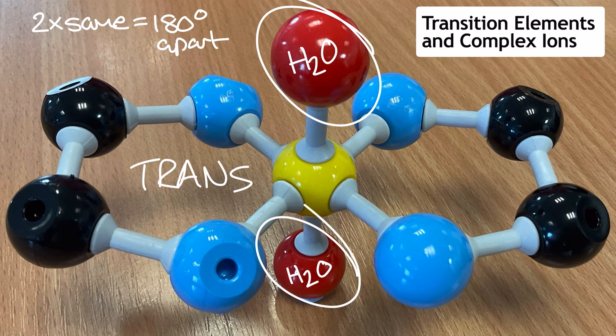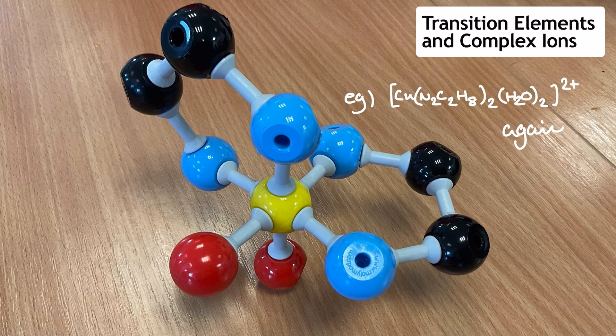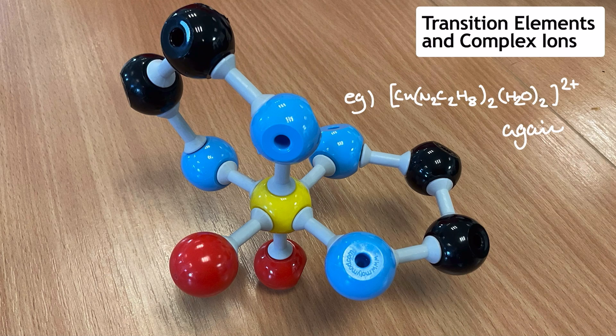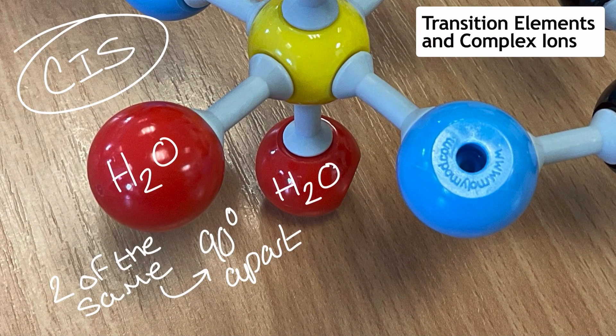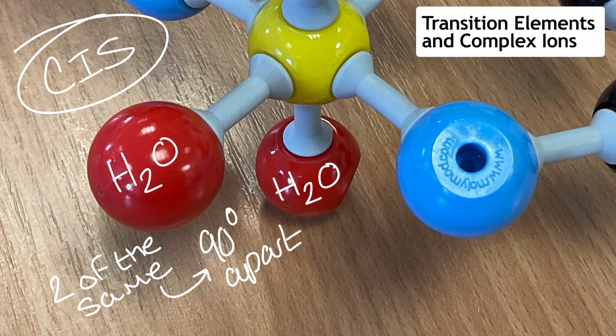Let's say I was to move them 90 degrees apart. Well, that actually would be a different stereoisomer that, again, you may recognize from alkene chemistry in module 4. This one can be described as cis, and here we've got the two of the same ligand 90 degrees apart.